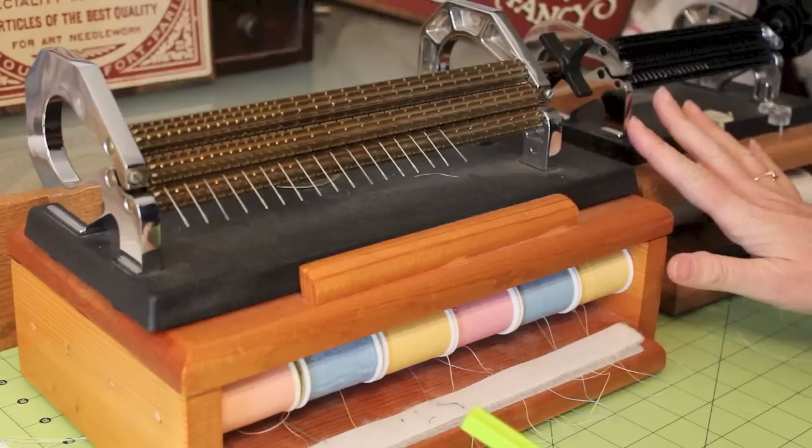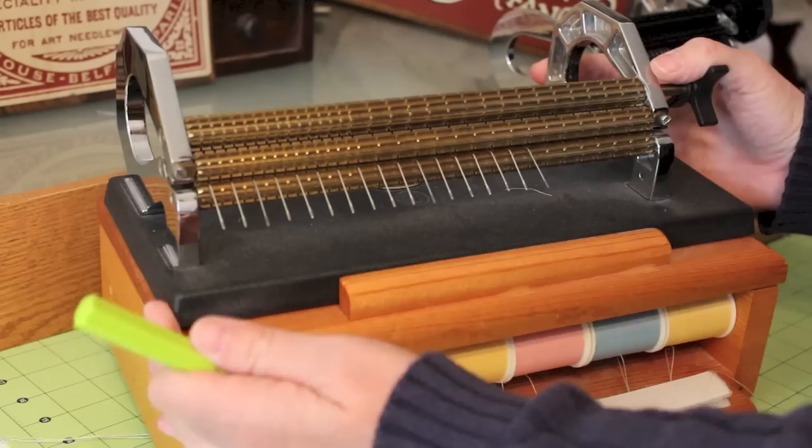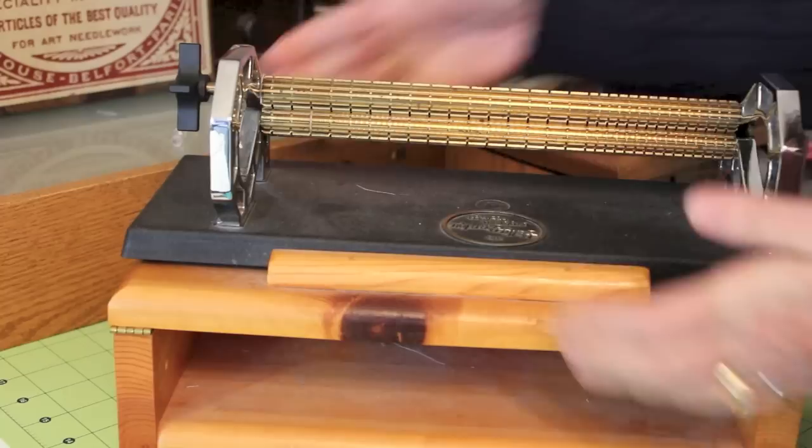We're just going to work on this pleater because both pleaters work pretty much the same way. This side of the pleater is called the needle side, and if you look at the back of the pleater, this would be called the gear side.